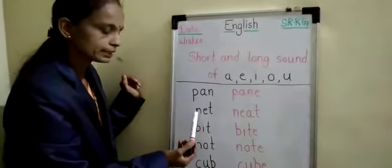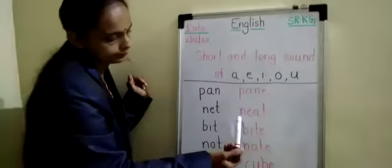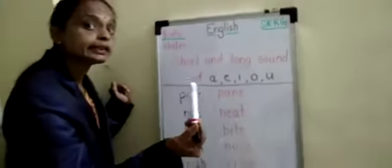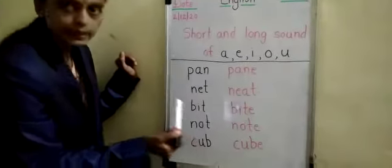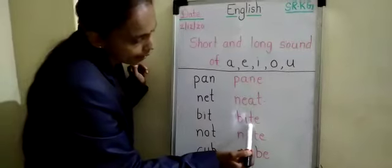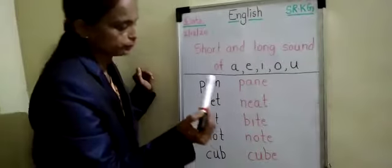Now, look at this next word. N, E, T, NET. N, E, A, T, NEAT. Okay. B, I, T, BIT. B, I, T, E, BITE. Okay.